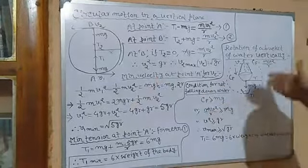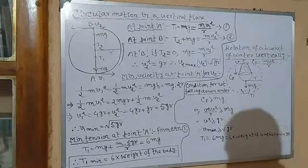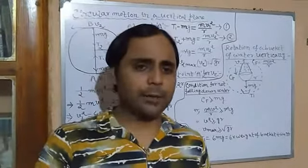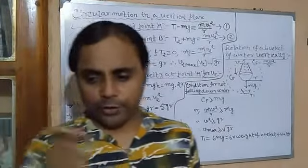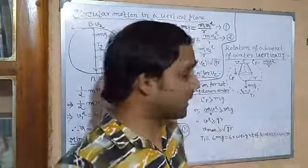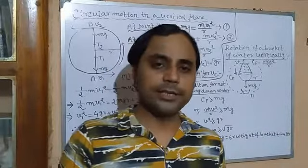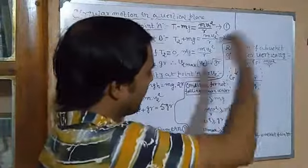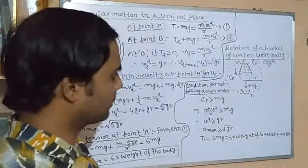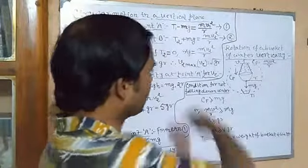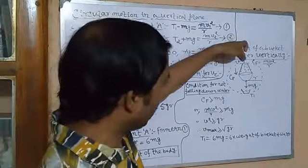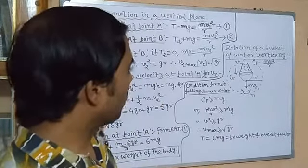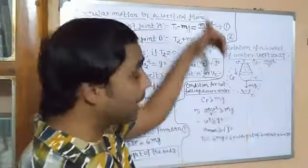Now we discuss a very interesting application. If we take a bucket not completely full of water and rotate it fast in a vertical plane, even when the bucket is at the top, the water doesn't fall down. But if we rotate very slowly, it falls. What is the condition for the water not falling? Centripetal force acts on the bucket radially inward.